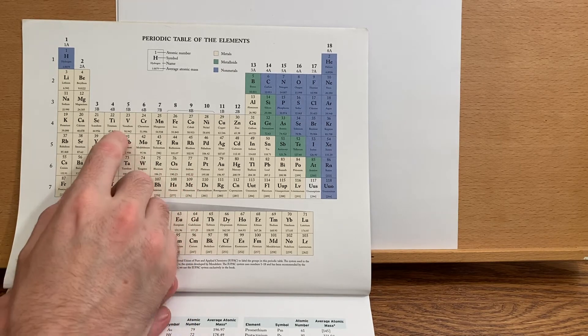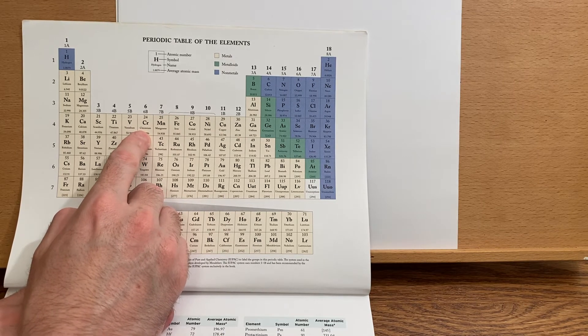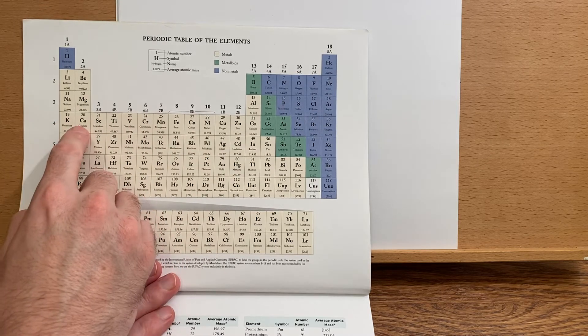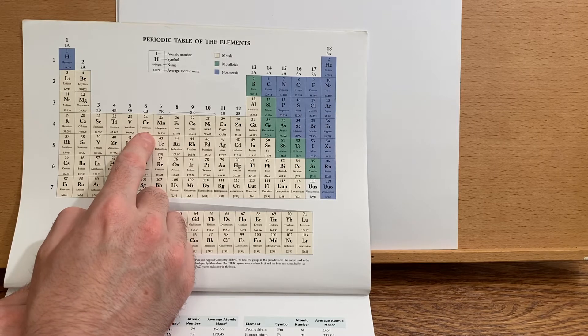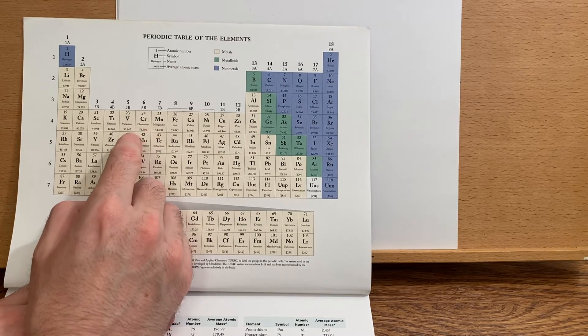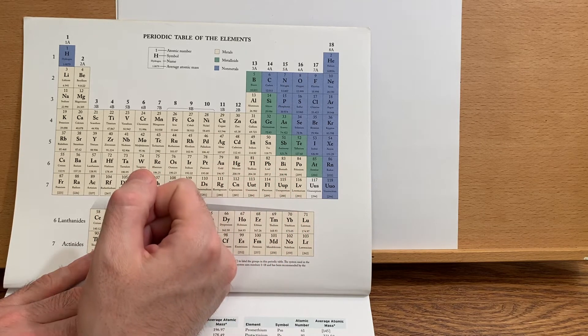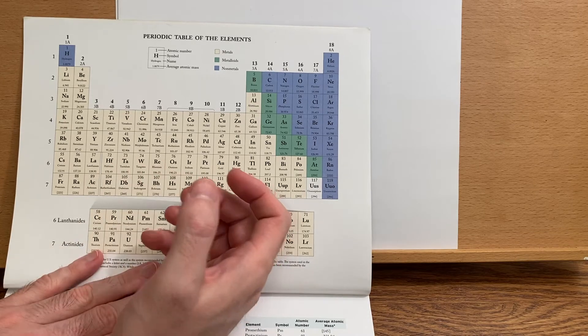Now you might say, oh remember there are those exceptions - chromium has 4s1 3d5 - and to that I say, well, most of the time when we're dealing with transition metal complexes, we have either a plus two or a plus three charge on the metal. That's the oxidation state.